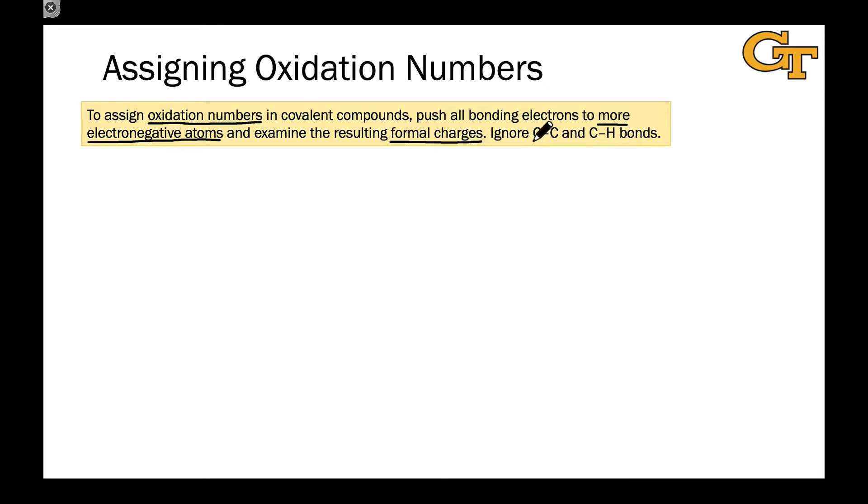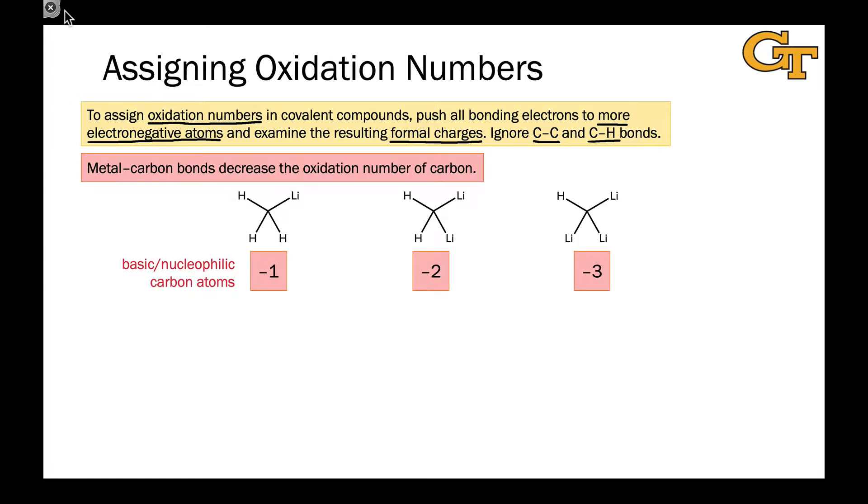In doing this, we tend to ignore carbon-carbon and carbon-hydrogen bonds. So let's look at a few examples. Here are some strongly reduced carbons with very low, in fact negative, oxidation numbers because metal-carbon bonds decrease the oxidation number of carbon.